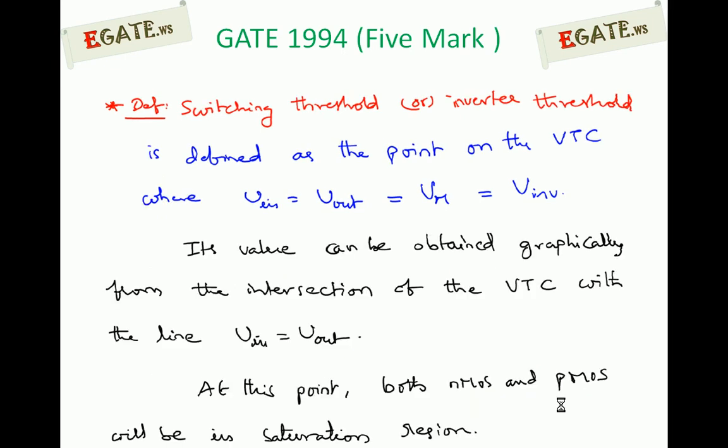We need to calculate the inverter threshold analytically, not just graphically. At the inversion point, both transistors are in saturation. We equate the drain currents: IDN equals IDP. No current flows into the gate because the gate is insulated by the SiO2 layer — there is no direct interaction between drain-to-gate or source-to-gate. So the current flowing through NMOS equals the current flowing through PMOS.